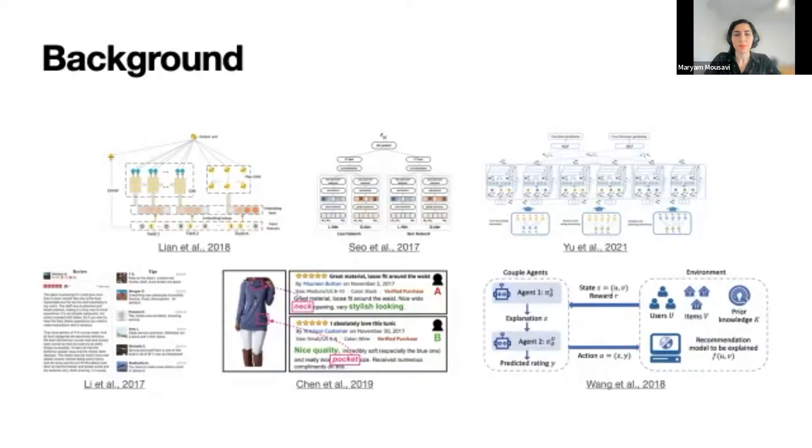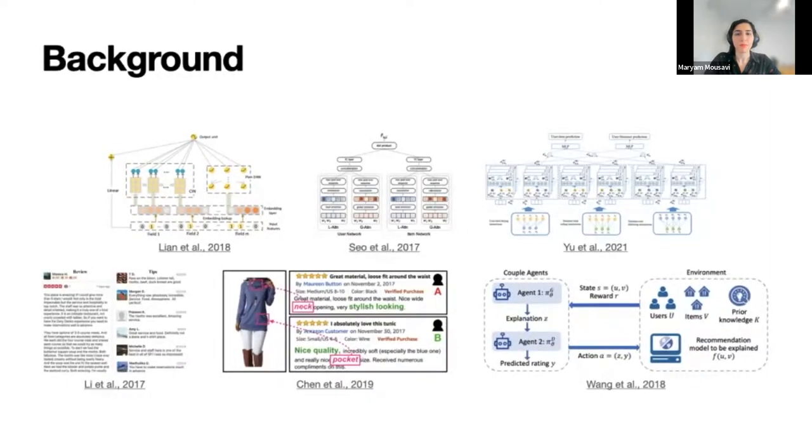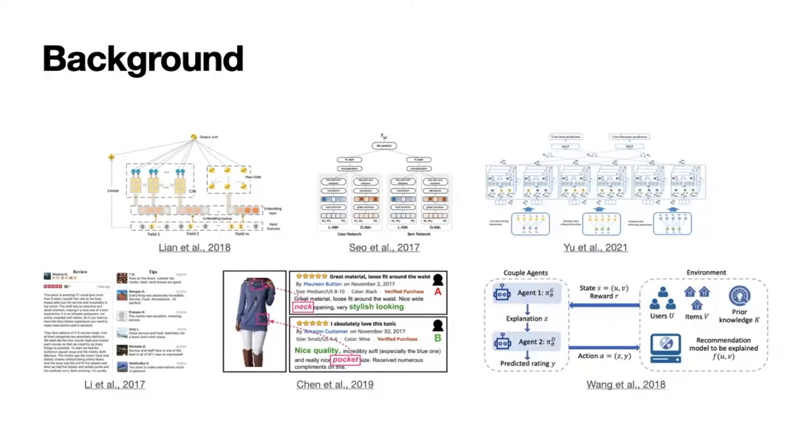Examples include using deep neural networks to learn both low- and high-order feature interactions, generating sentence explanations based on natural language generation models, adopting neural attention mechanisms to learn the importance of each region of an image, or using reinforcement learning frameworks for explainable recommendations.